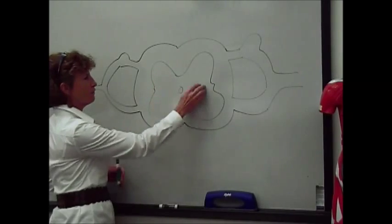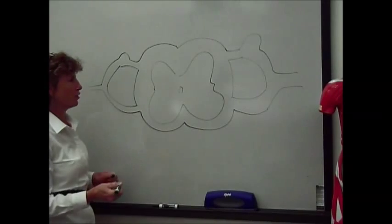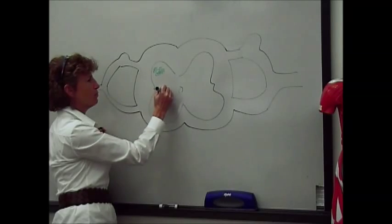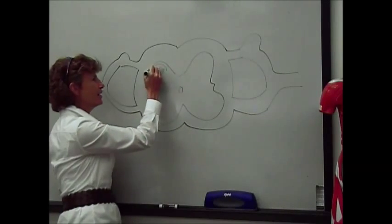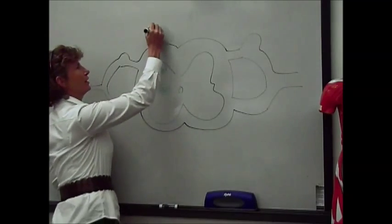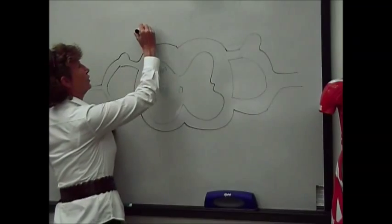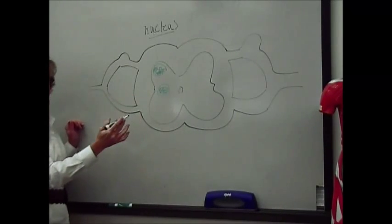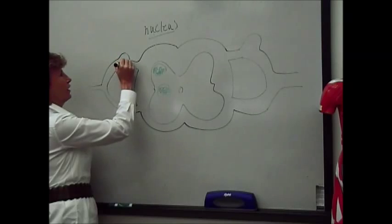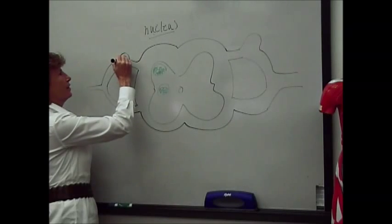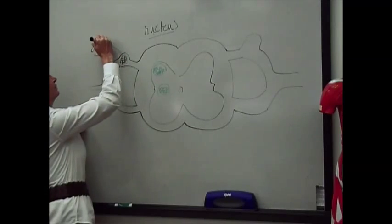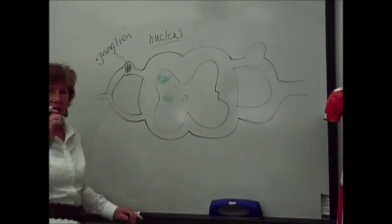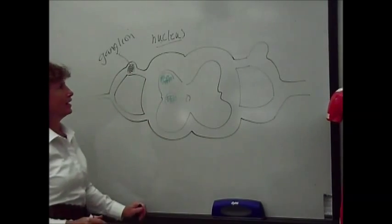In the spinal cord, the gray matter forms this kind of butterfly shape in the center of the spinal cord, so all of this would be full of cell bodies of different neurons. If you have cell bodies inside the central nervous system, they get into groups, and we call those a nucleus. So a nucleus is a group of cell bodies inside the central nervous system. If you have a group of cell bodies outside the central nervous system, then you would call that a ganglion. A ganglion is simply a group of cell bodies of neurons outside the nervous system; inside the nervous system, you call it a nucleus.